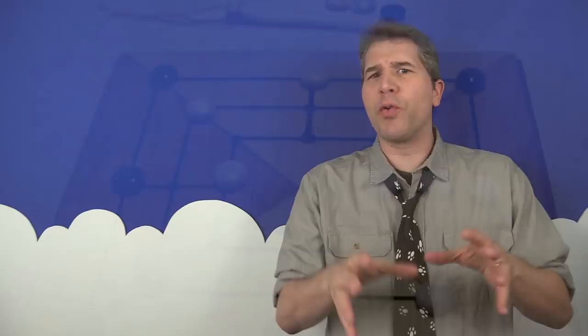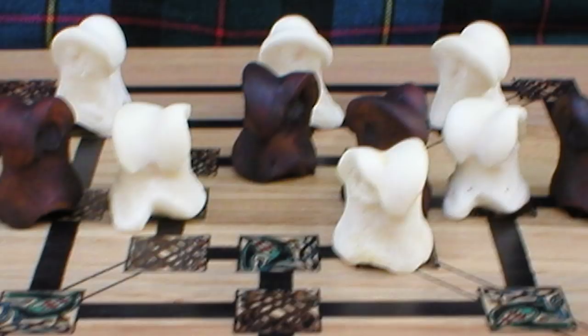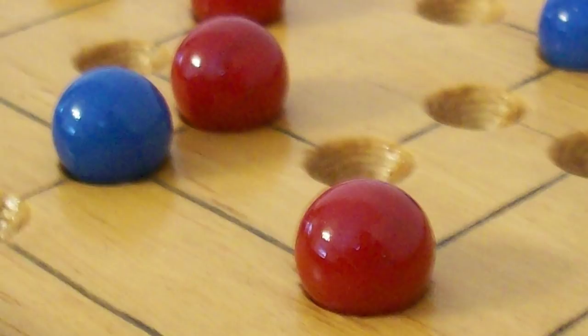Now, the Nine Men's Morris board consists of a grid with 24 intersections, and one player typically has nine black pieces and the other player nine white ones. Players try to form mills, which are rows of three of their pieces arranged either horizontally or vertically, and doing so allows them to remove one of their opponent's pieces from the game.